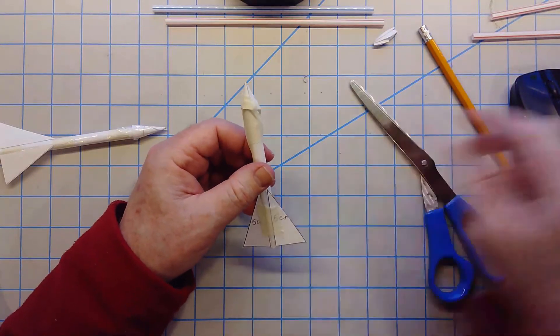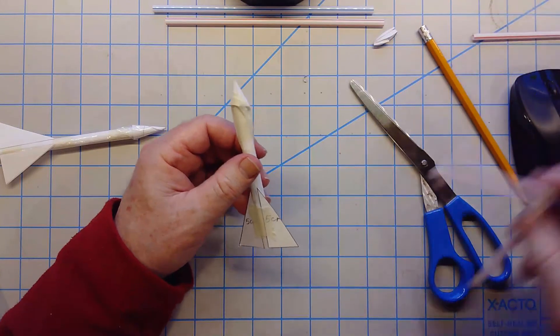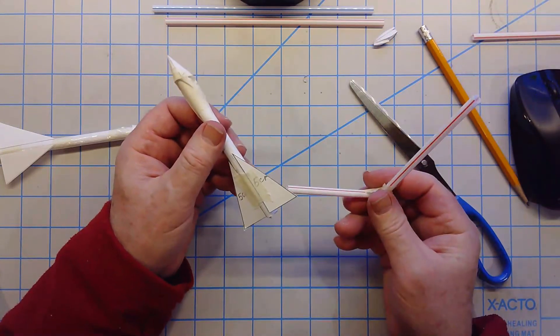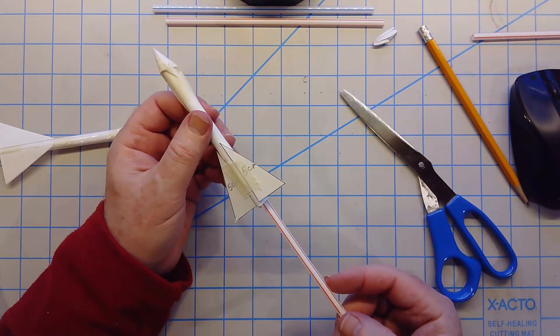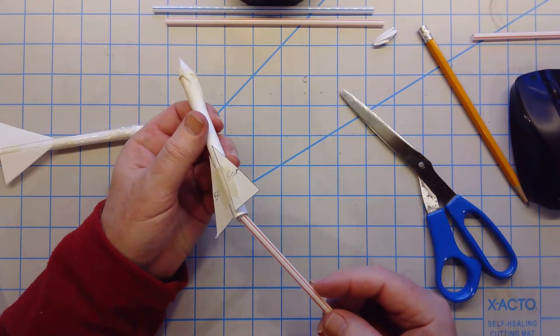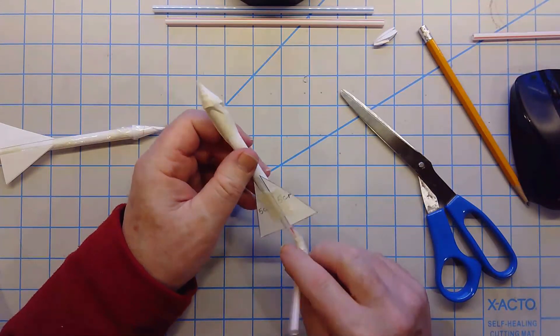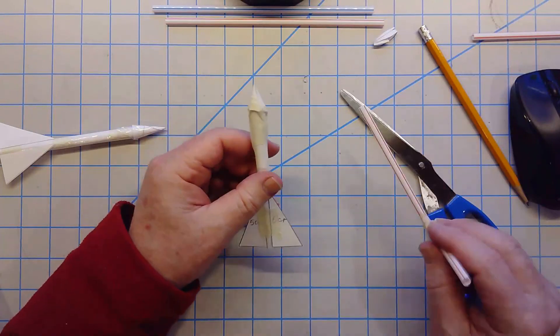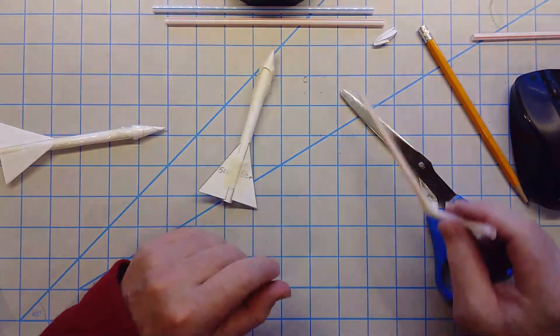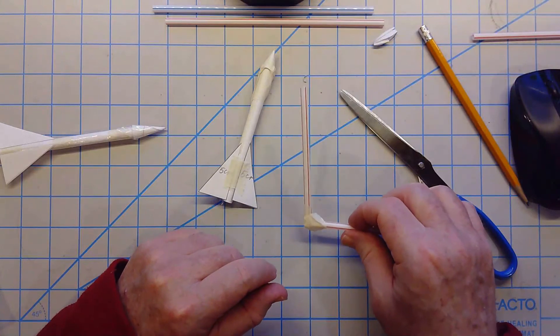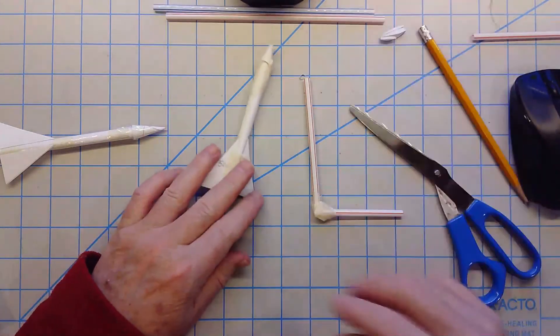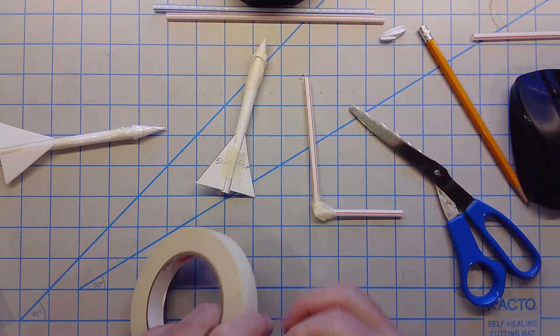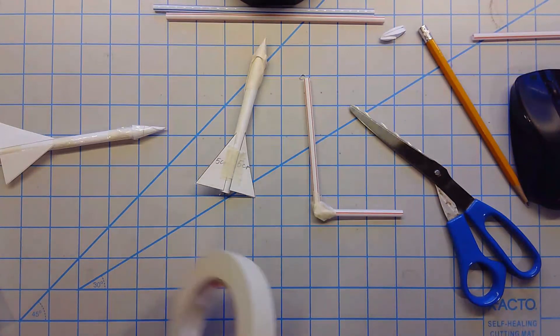And then all you do is if you have a bendy straw, you just bend your straw and put it inside because it will fit, that's where your pencil was, and if you blow on the end it will take off. Now once again, I'll just show you really quickly how to make one of these if you don't have a bendy straw, but you're going to need a few pieces of tape to start.